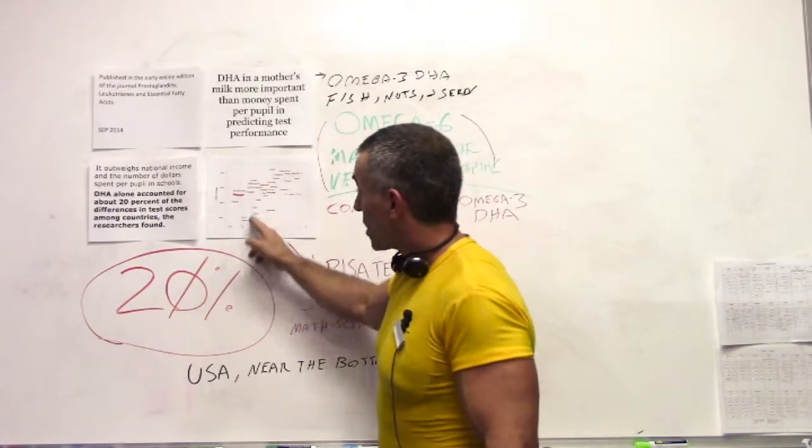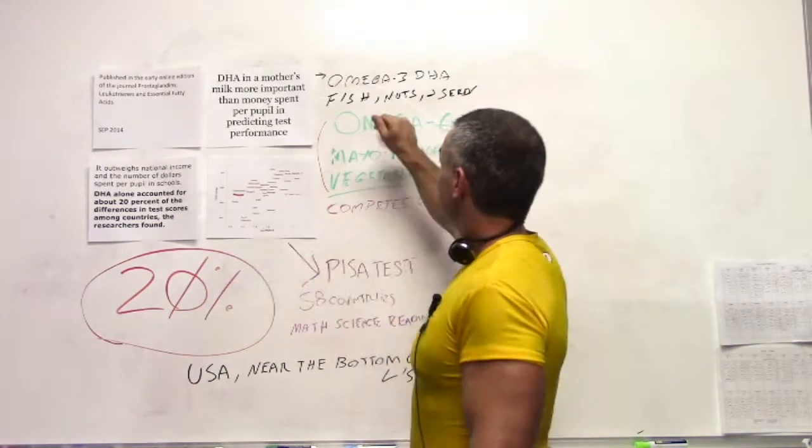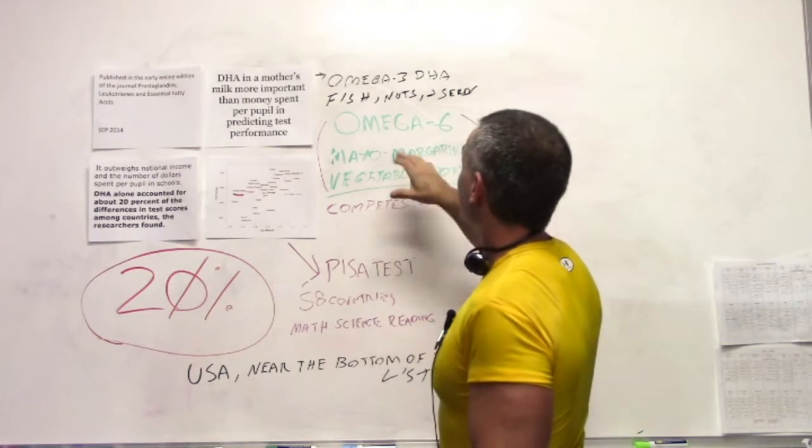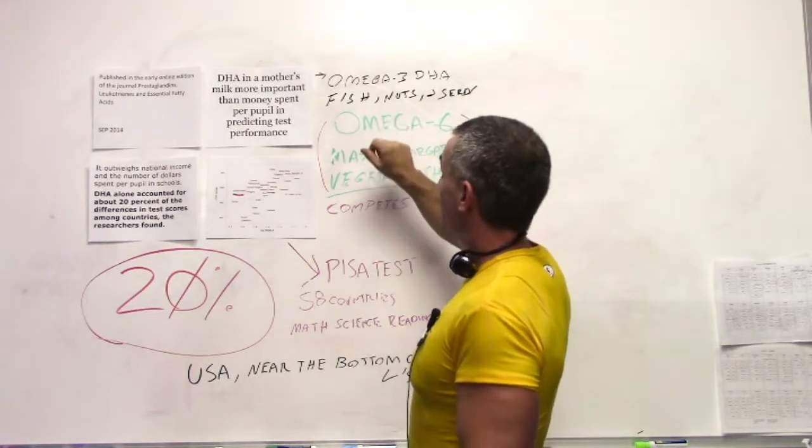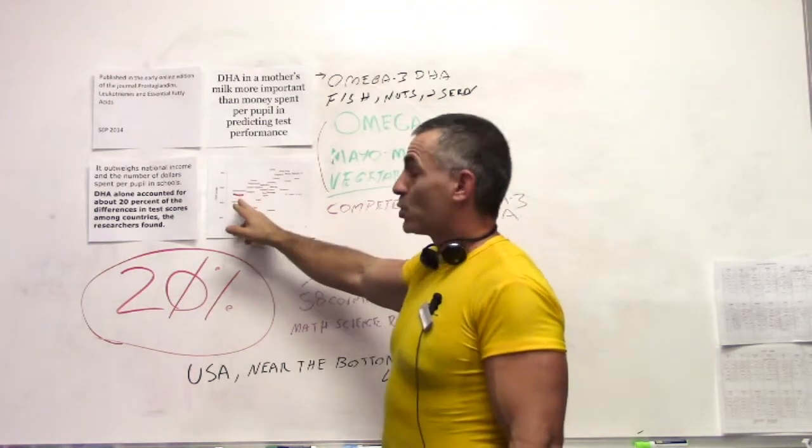In the United States, where are we? Well, as far as DHA, what you're looking at, omega-6 to omega-3 ratio, bad fats to good fat ratio, is towards the bottom.